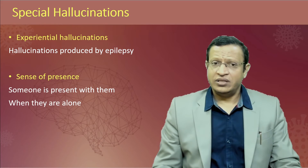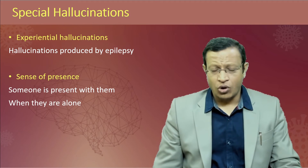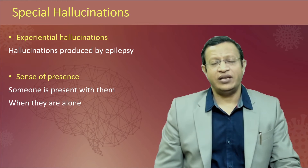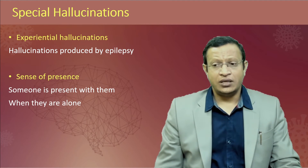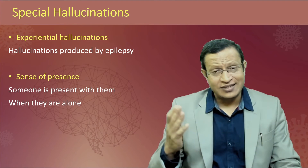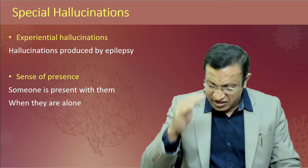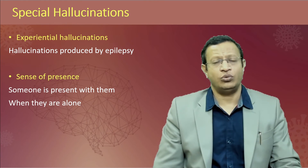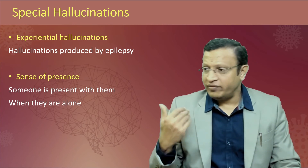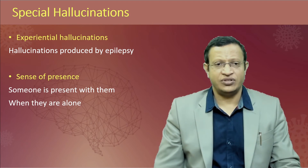Experiential hallucinations are produced by epilepsy, commonly in complex partial seizure. Sense of presence: classically seen in schizophrenia patients — the patient feels that somebody is standing behind him, or whenever he is alone in a room he feels that somebody else is also there. He will search but can't see them, yet still feels somebody is in the room. Whenever he turns back, the person vanishes. Sense of presence is another kind of hallucination.